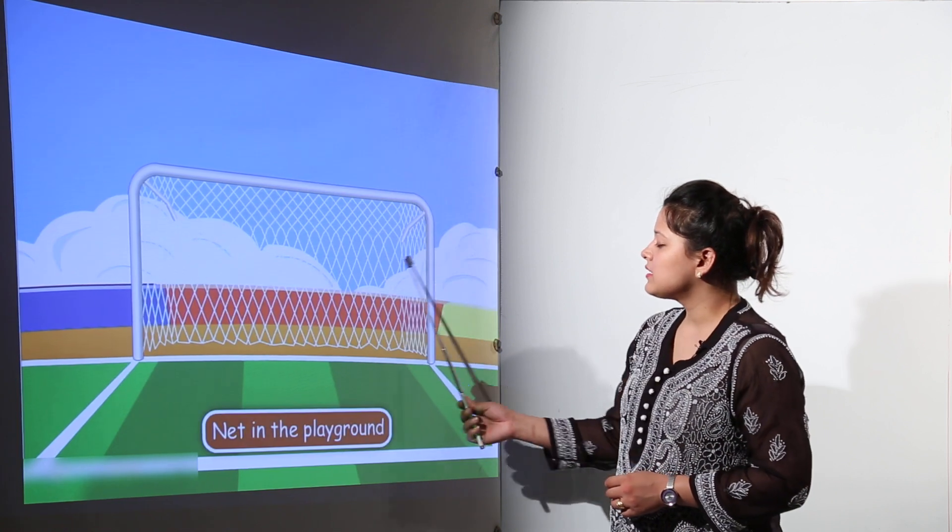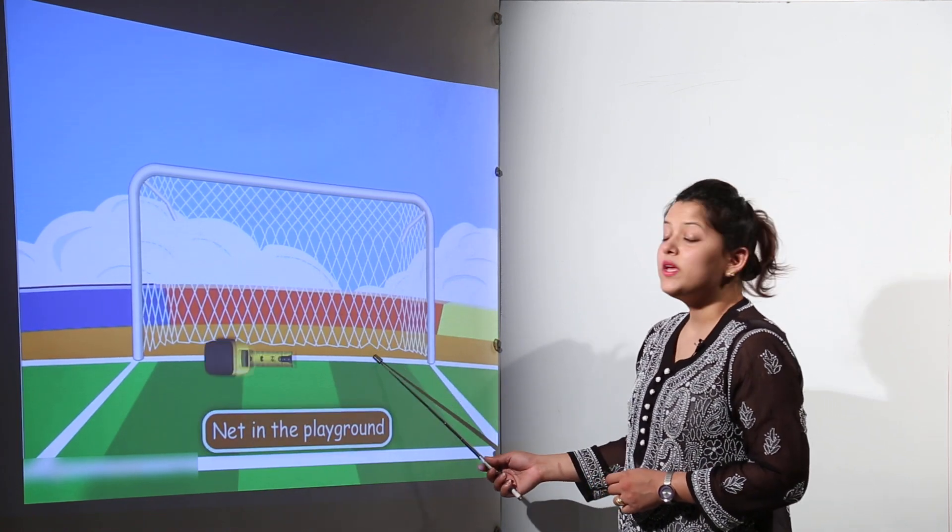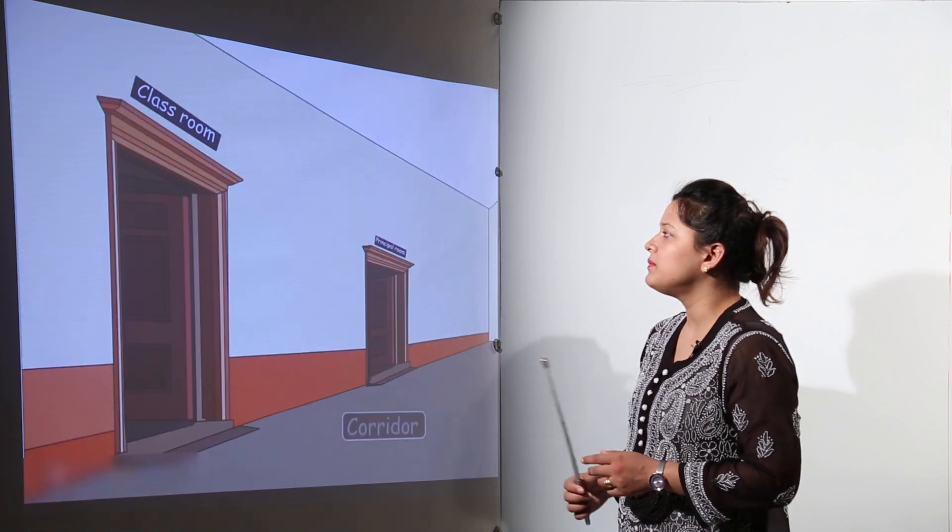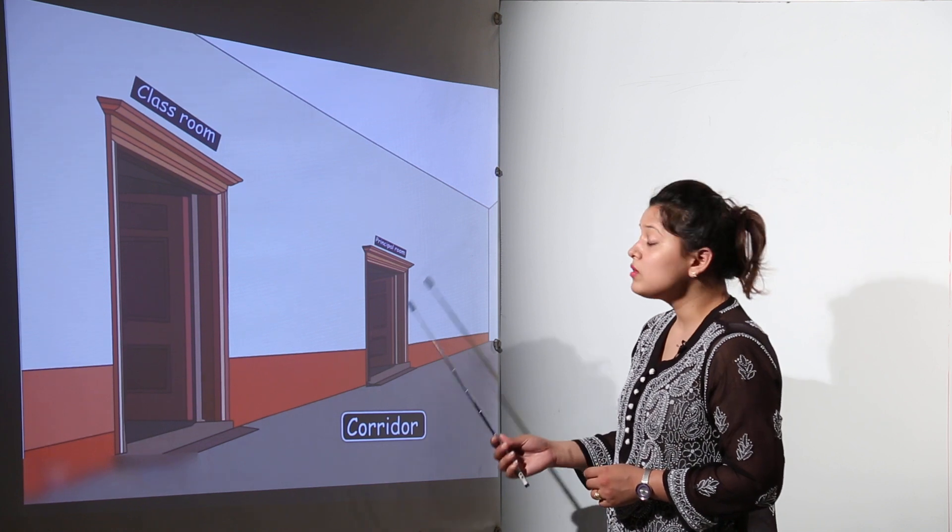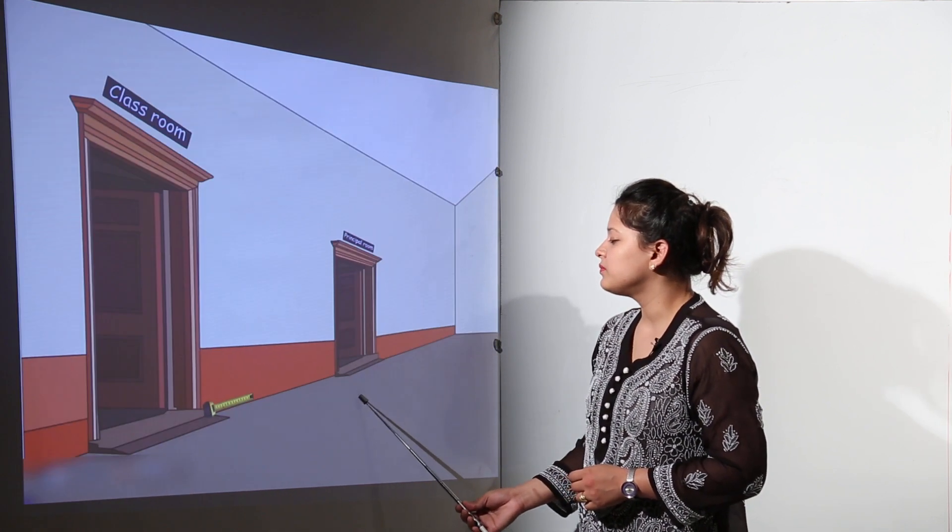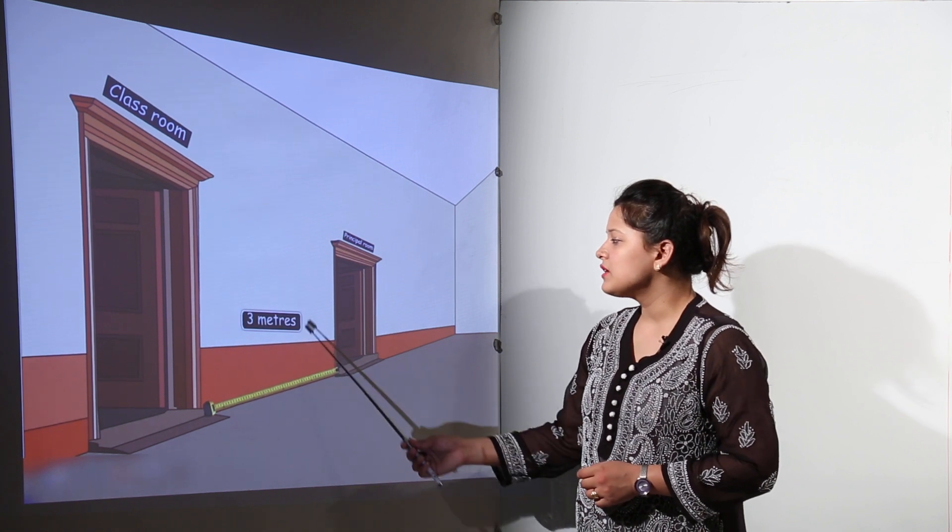Here is a net in the playground. We can measure its length by using the meter scale. Here that is 4 meters. We can also measure the length between the classroom and the principal's room and that is 3 meters.